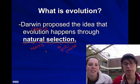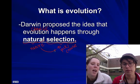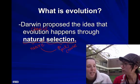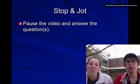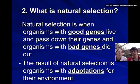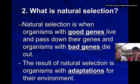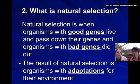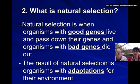So if we put this together, natural selection has to do with nature picking or choosing. Now, what this definition says is: natural selection is when organisms with good genes live and pass down their genes, but organisms with bad genes die out.